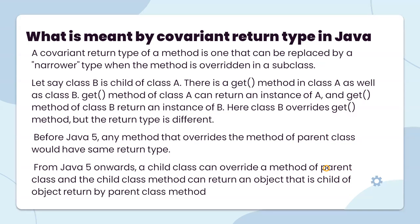What is meant by covariant return type in Java? The covariant return type of a method is one that can be replaced by a narrower type when the method is overridden in a subclass. For example, let's say class B is a child of class A and there is a get method in both class A and class B.